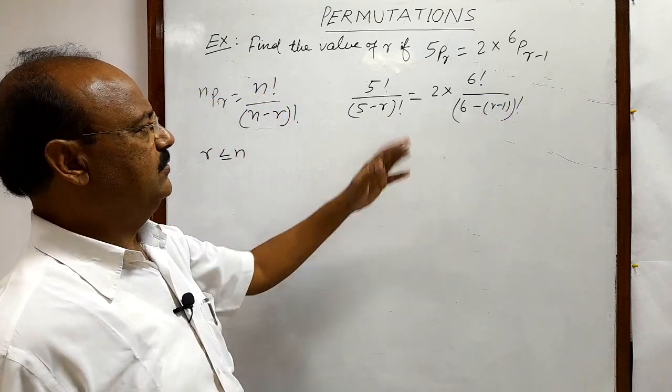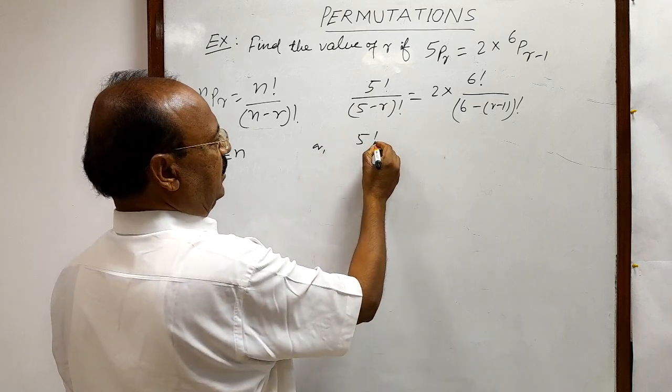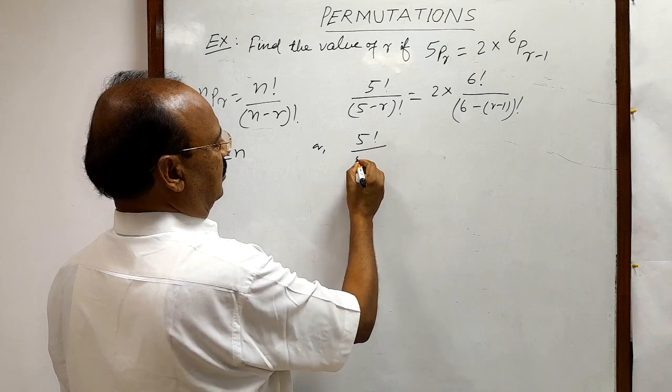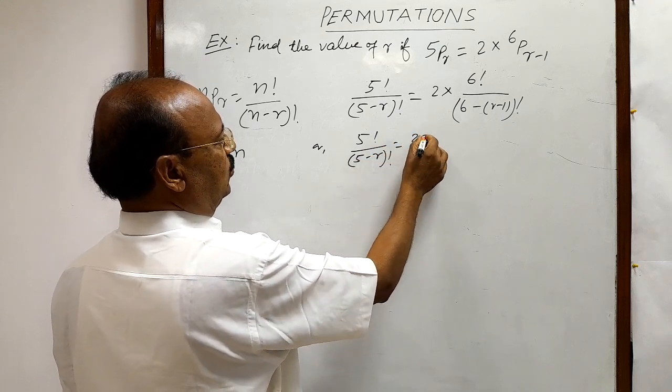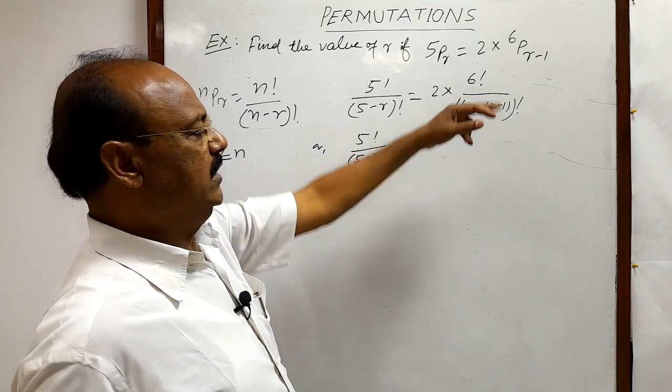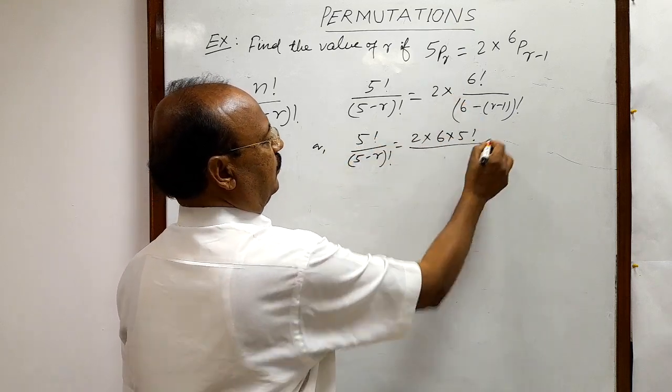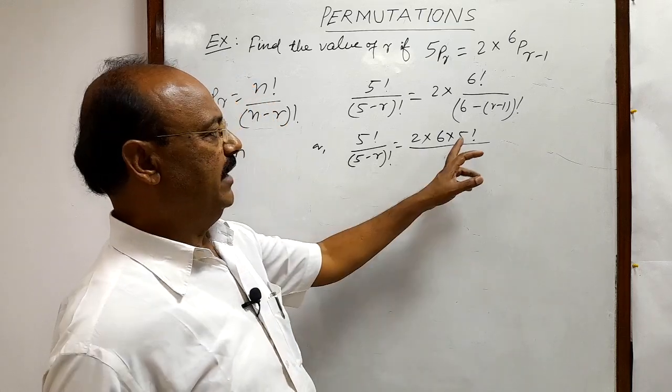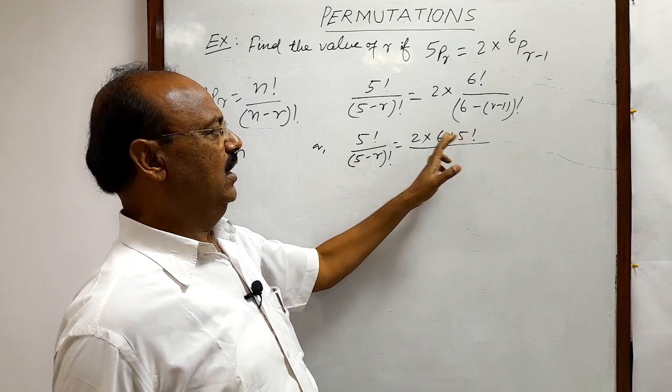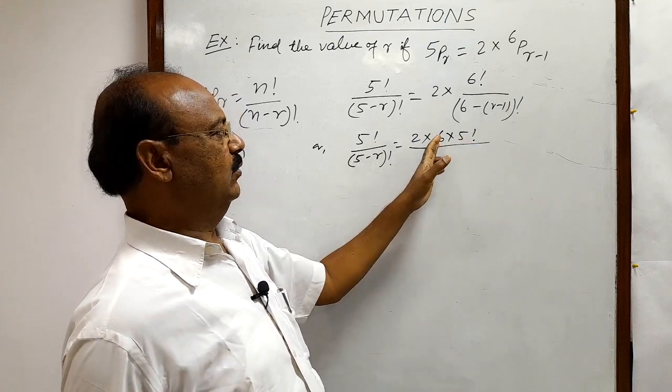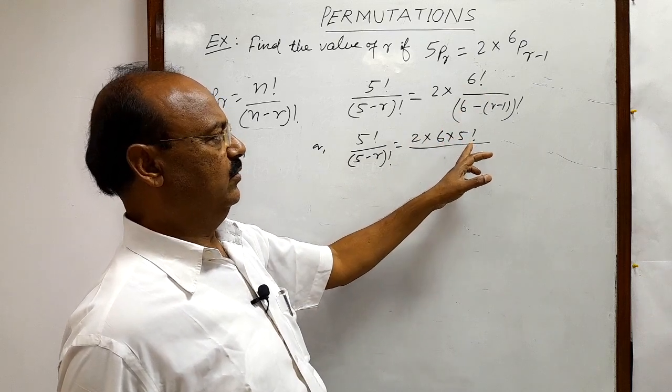Now let us simplify it further. This is 5 factorial by 5 minus r whole factorial is equal to 2 into this 6 factorial can be written as 6 into 5 factorial. Because in 5 factorial we are having all multiplications from 1, 2, 3, 4 up to 5, and this is 6. So finally this is 6 factorial. So 6 factorial can be written as 6 into 5 factorial.